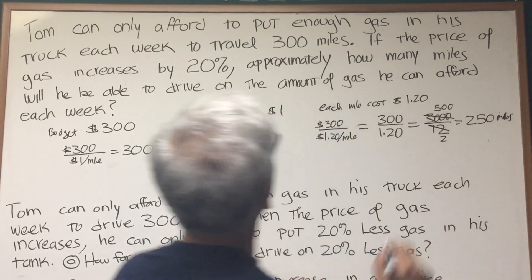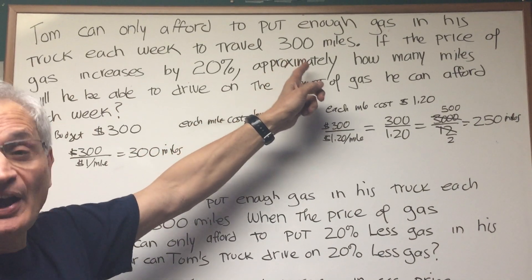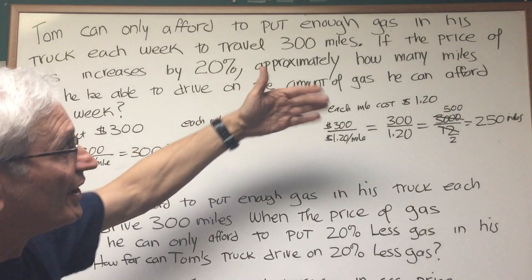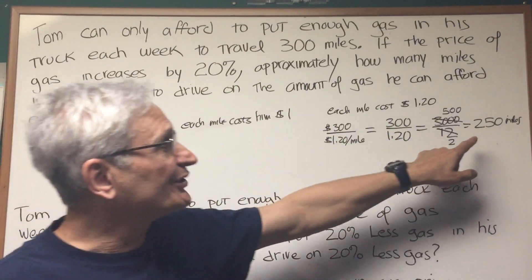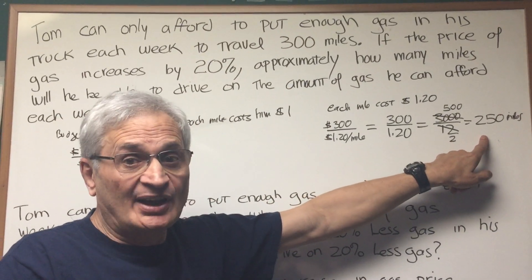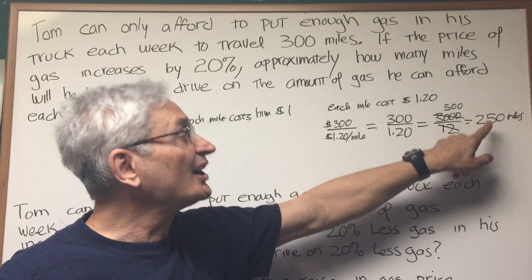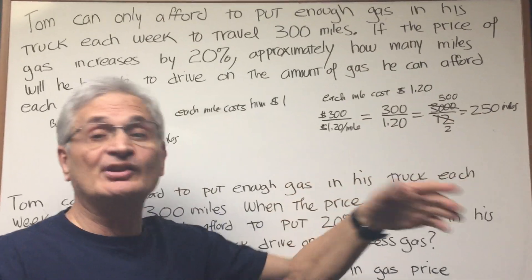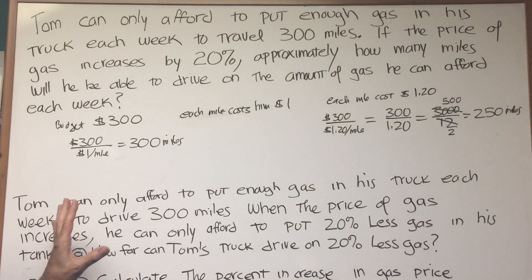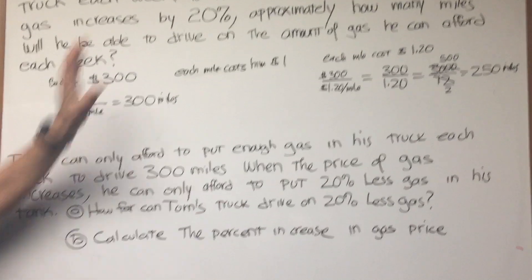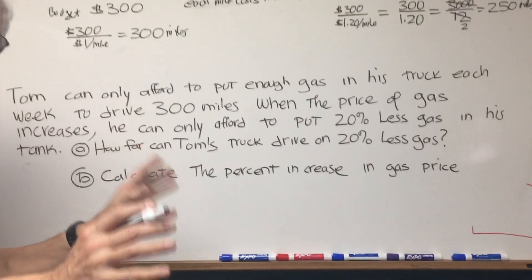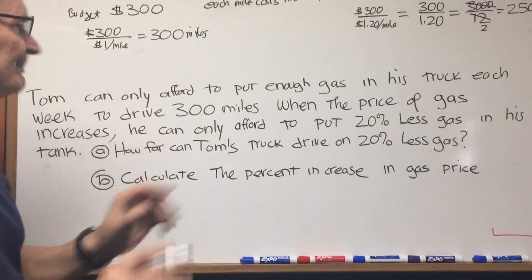So you see, it's not 20% less miles than 300. We have to go through a ratio calculation to find out that when gas increases by 20%, he can only travel 250 miles. Now here is a related problem. I put these two problems back to back so we can look at the difference between them.